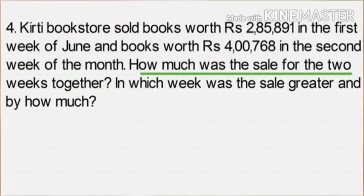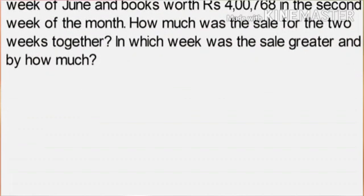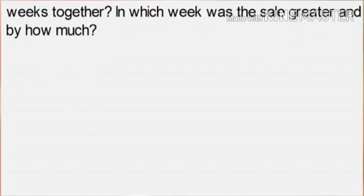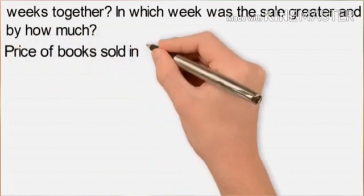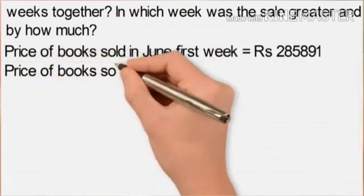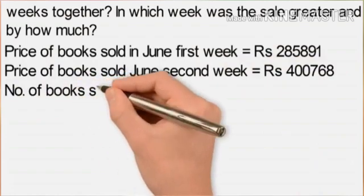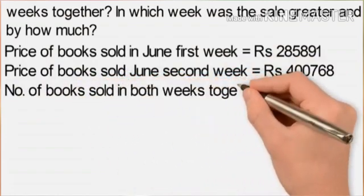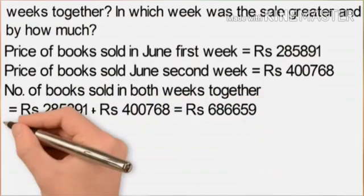Obviously the second week sale is greater. We have to do two calculations: one addition and one subtraction. Price of books sold in June first week equals rupees 2,85,891. Price of books sold in June second week equals rupees 4,00,768. Total books sold in both weeks together equals rupees 2,85,891 plus rupees 4,00,768, which equals rupees 6,86,659.